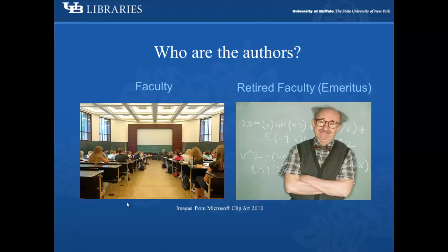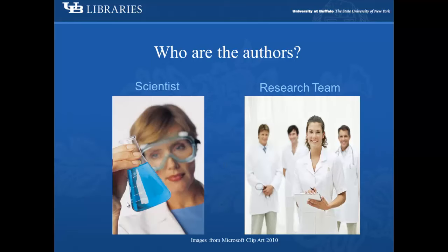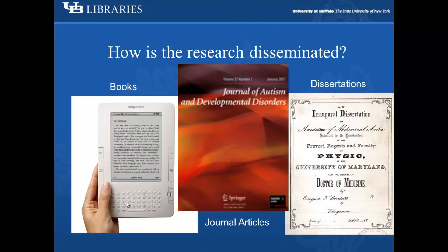Authors of academic writing include university professors or retired faculty. They can also be scientists or research teams. Academic scholarship is disseminated many ways. Books, journal articles, and dissertations are three common venues.